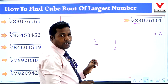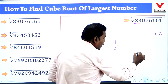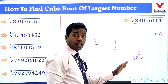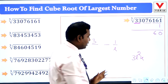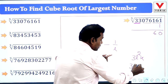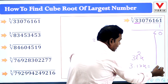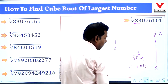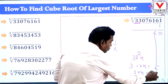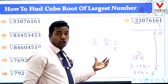Now we find the middle number using the formula 3L²K. Here L is the last digit number, which is 1, so 3 × 1² × K = 6 (the tens digit). That gives 3K = 6, so K = 2. We get the result 321, which is the cube root of 33076161.